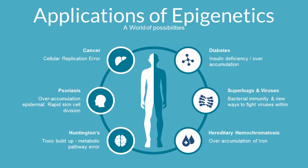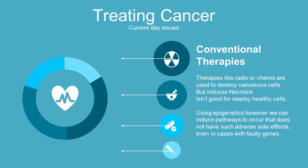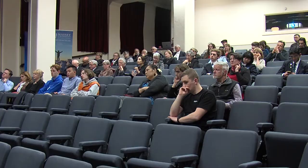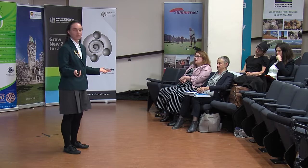The applications of epigenetics represent a world of possibilities, whether we have an over-accumulation or deficiency of something. We can apply it to HIV, Huntington's, and even cancer. We can boost the expression of tumour suppressor genes while inhibiting the expression of oncogenes. Therapies like radiotherapy or chemotherapy are dangerous to our cells, but with epigenetic therapy, we can still deconstruct unhealthy cells while leaving healthy cells out of the crossfire. With epigenetics, we could simply switch the problematic gene off.